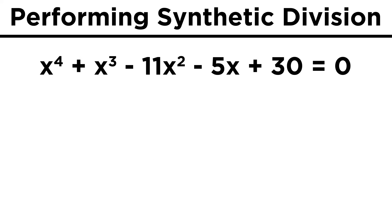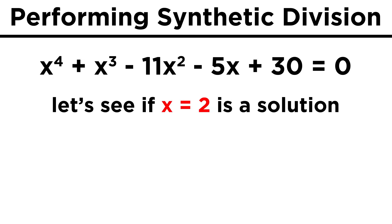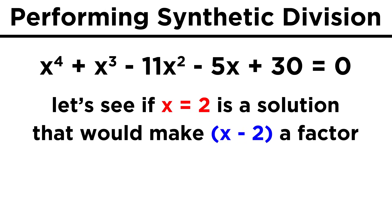Let's say we are looking at x to the fourth plus x cubed minus eleven x squared minus five x plus thirty, and we want to see if x equals two is one of the solutions. If it is, then x minus two would be a factor, and that could allow us to simplify the expression.